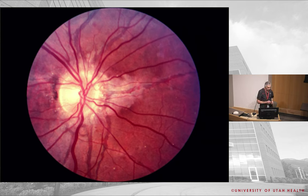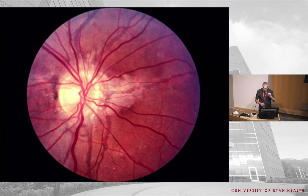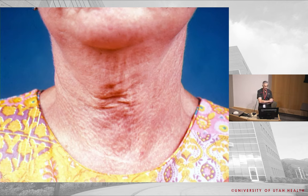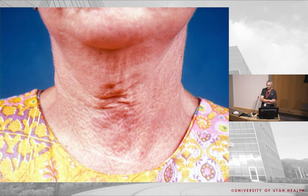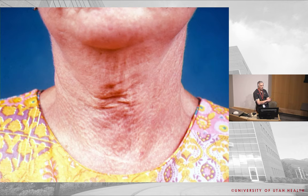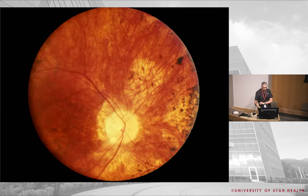These are angioid streaks — they look almost like medusa snake-heads radiating from the disc. Angioid streaks are breaks in Bruch's membrane. The associated photo of the neck shows the 'plucked chicken' skin appearance of pseudoxanthoma elasticum (PXE) — a connective tissue disorder affecting Bruch's membrane. Angioid streaks from PXE can allow neovascularization to form, so it's important to recognize them.